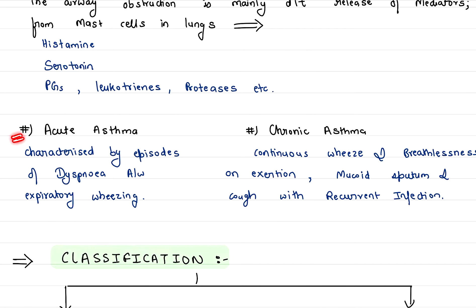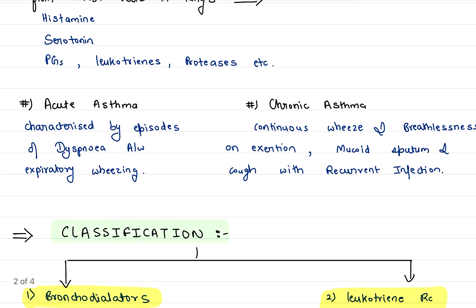Now we have two types: acute and chronic asthma. Acute asthma is characterized by episodes of dyspnea, always associated with expiratory wheezing. Chronic asthma presents with continuous wheeze and breathlessness on exertion, mucoid sputum, and cough with recurrent infection.